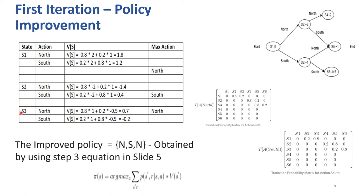For S3, taking north: 0.8 probability of reaching S5 (destination, value=1) plus 0.2 probability of reaching S6 (prison, value=-0.5), giving 0.8×1 + 0.2×(-0.5) = 0.7. Taking south: probabilities interchange — 0.2×1 + 0.8×(-0.5) = -0.2. North still gives the maximum value, so north remains for S3. After the first iteration, the updated policy is N, S, N — north from S1, south from S2, north from S3.